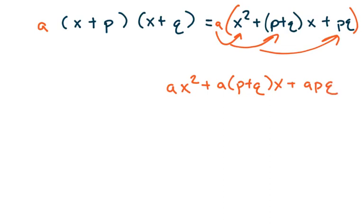Now, when we usually look at this sort of notation, we usually see it in standard form, ax squared plus bx plus c. And what we'll notice is that ax squared matches up with ax squared. We'll also see that bx matches with a times quantity p plus q, x.